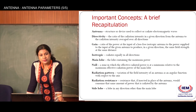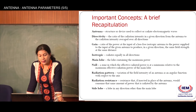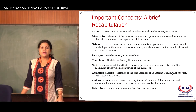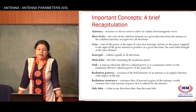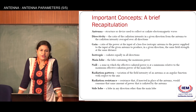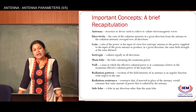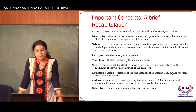The next parameter is gain. Gain is the ratio of the radiated power output to the input power. If the gain of the antenna is negative, it means the antenna is not radiating anything and is acting as an attenuator. For the antenna to function as a radiating element, the antenna gain should be positive.